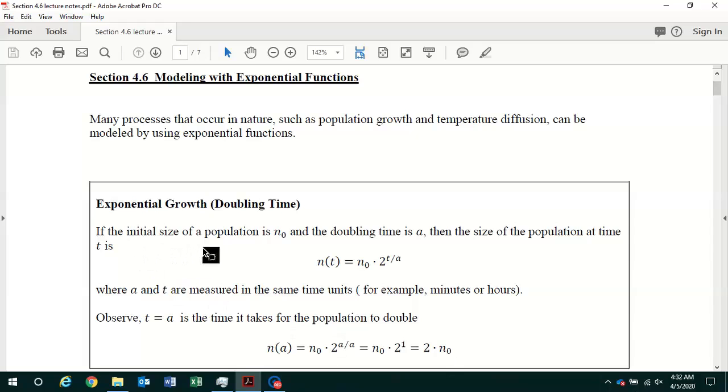If the initial size of a population is given by n sub zero, and the time it takes for the population to double is a units of time, then the size of the population at time t is given by this function. In mathematics, we often use the letter t to represent time.